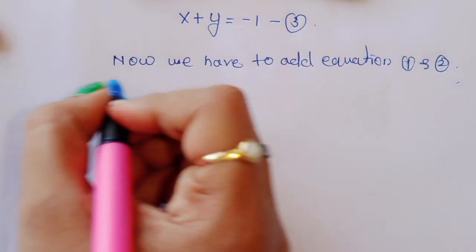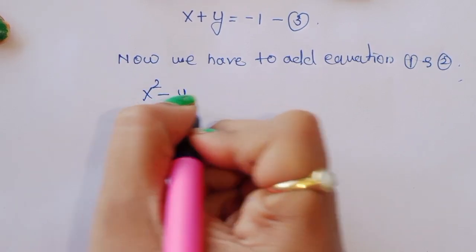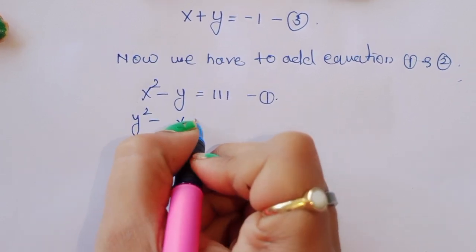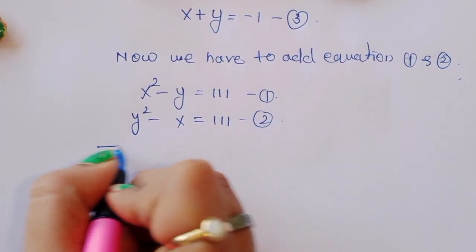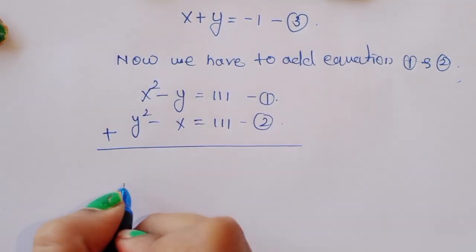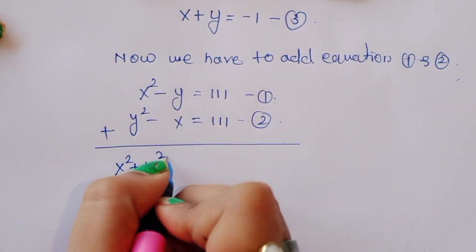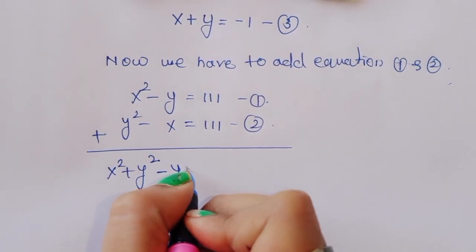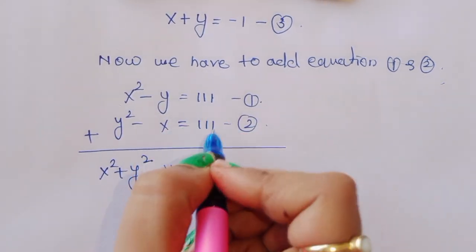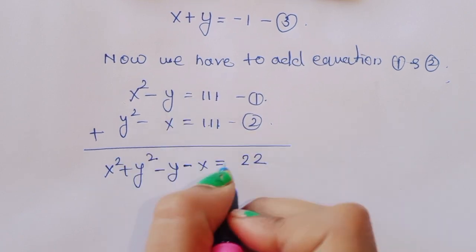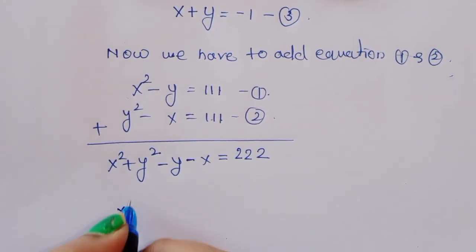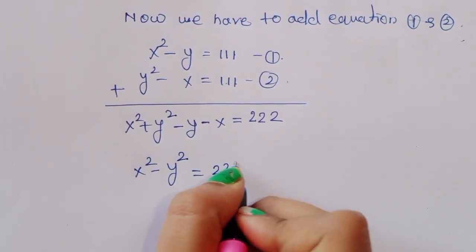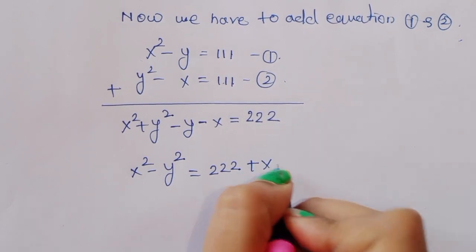Now we add equation 1 and equation 2. Equation 1 is x squared minus y equals 111, and equation 2 is y squared minus x equals 111. Adding these gives x squared plus y squared minus x minus y equals 222. So we can write x squared plus y squared equals 222 plus (x plus y). This is equation 4.